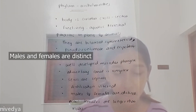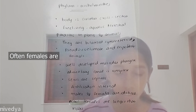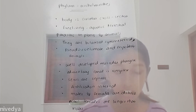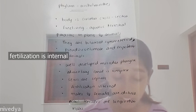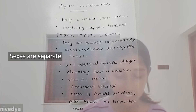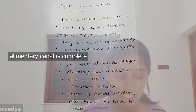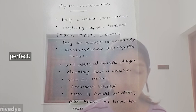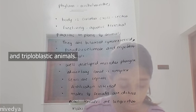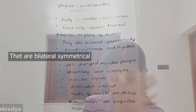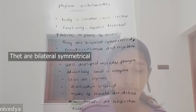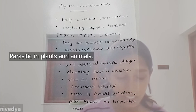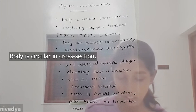Males and females are distinct, often females are longer than males. Fertilization is internal, sexes are separate, alimentary canal is complete. Well-developed muscular pharynx. Pseudocoelomate and triploblastic animals. They are free-living, aquatic, terrestrial, parasitic in plants and animals. Bodies circular in cross section.